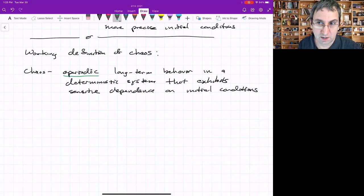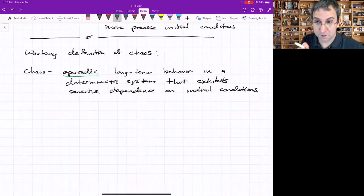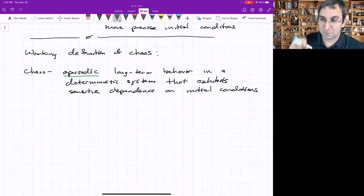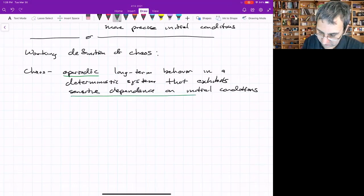Aperiodic means just not periodic. So a fixed point or a limit cycle, some periodic motion would be periodic. Quasi-periodic would also count as aperiodic.